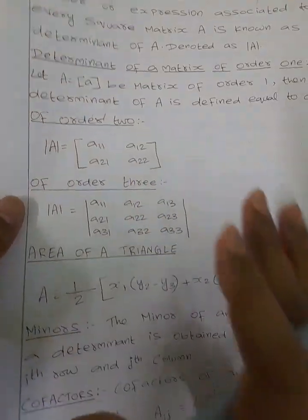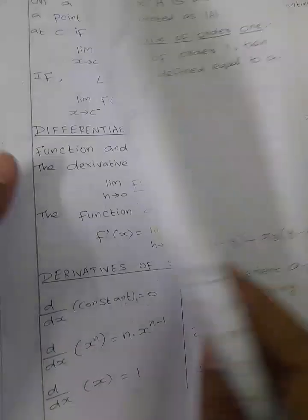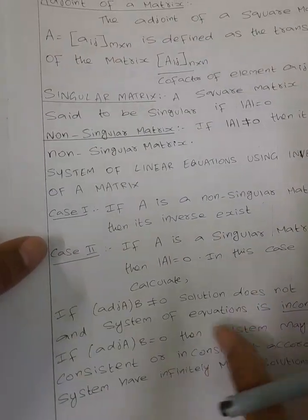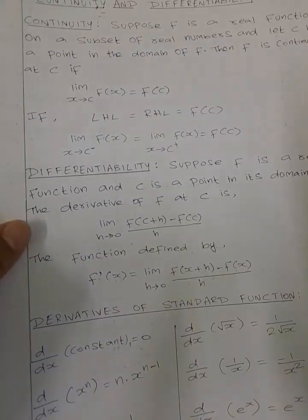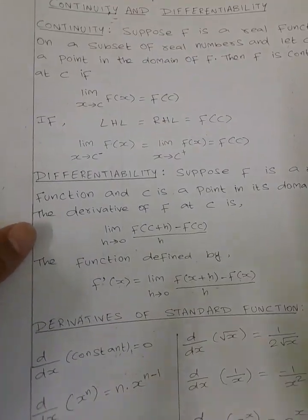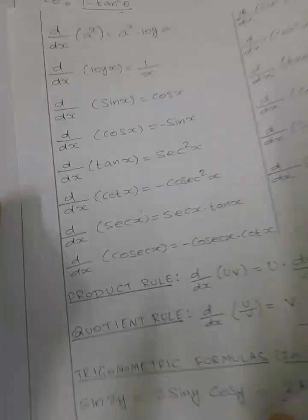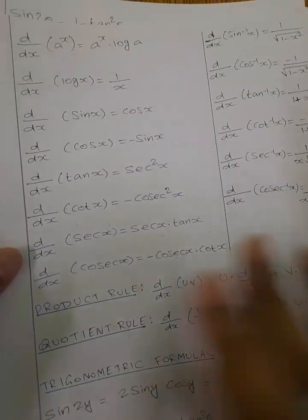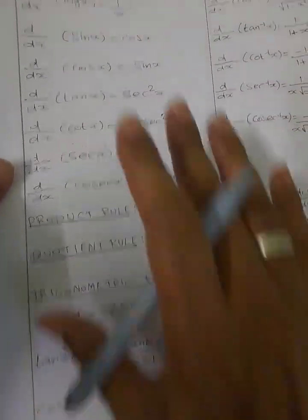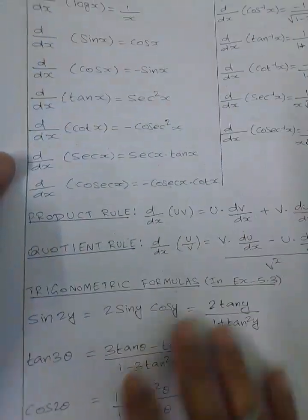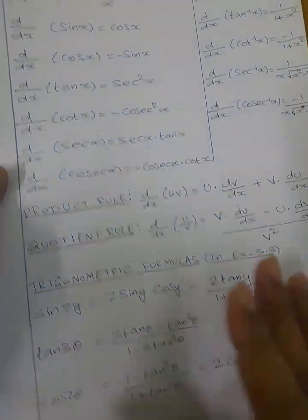Fourth unit: Determinants, Area of a triangle, Minors, Cofactors, Singular, Non-singular. Fifth unit: Continuity, Differentiability, Derivative standard function, Differentiability — all the formulas are top to bottom.